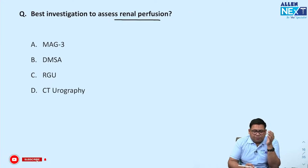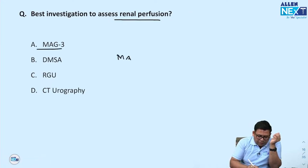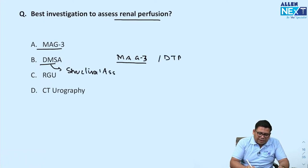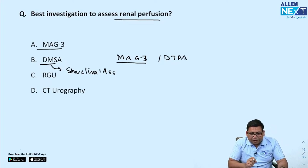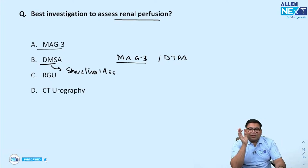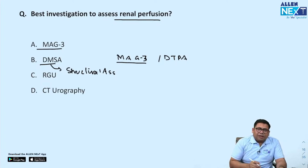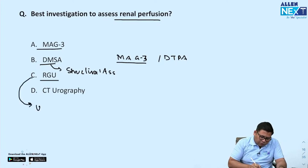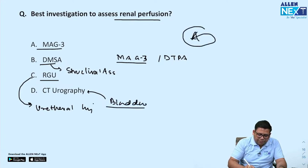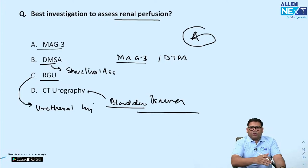Best investigation to understand renal perfusion: MAG3 scan. DMSA is for structural assessment. MAG3 or DTPA scan is for renal perfusion. Retrograde RGU is for urethral injury. CT urography is for bladder trauma. The answer for renal perfusion is MAG3.